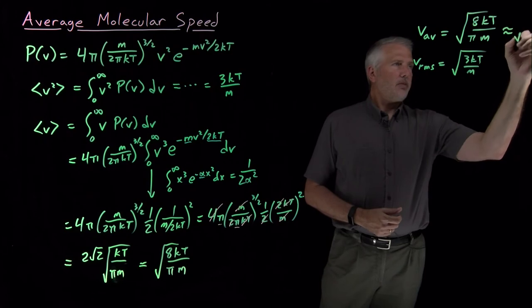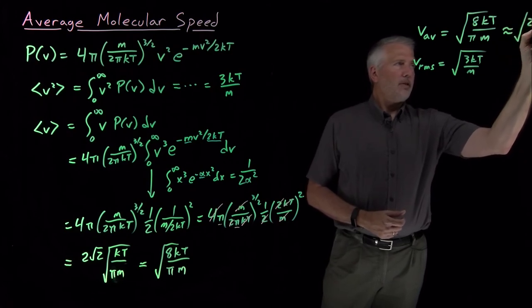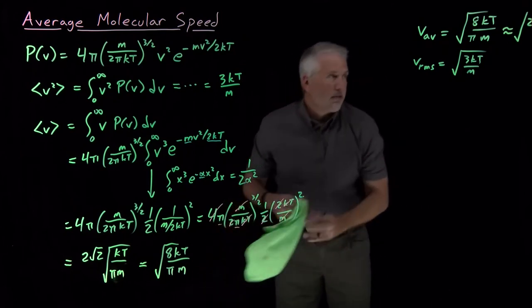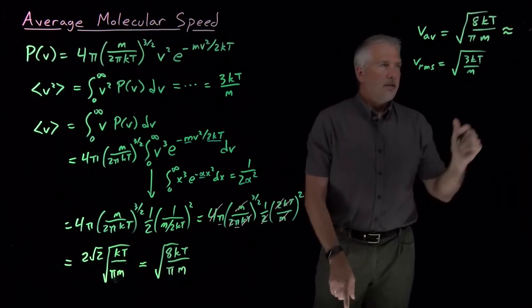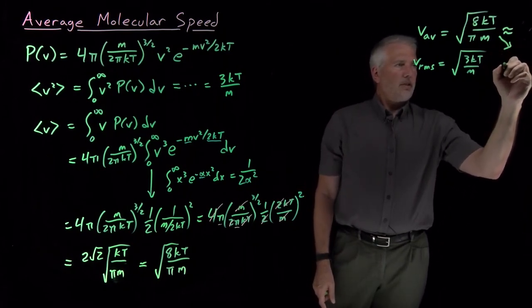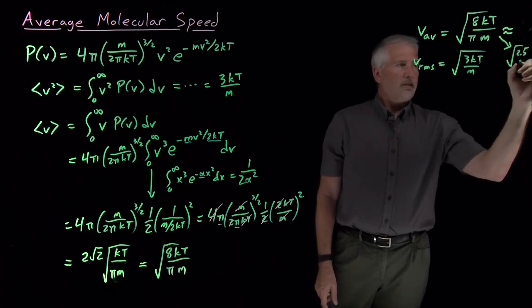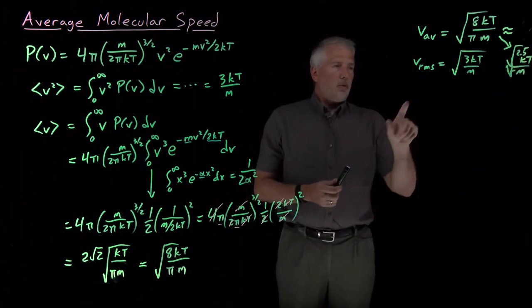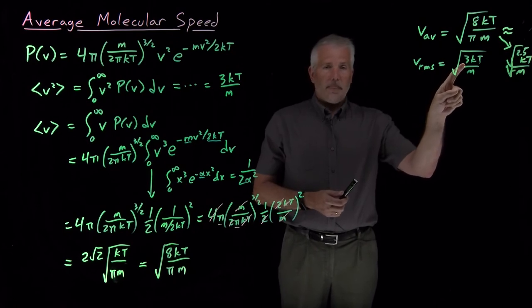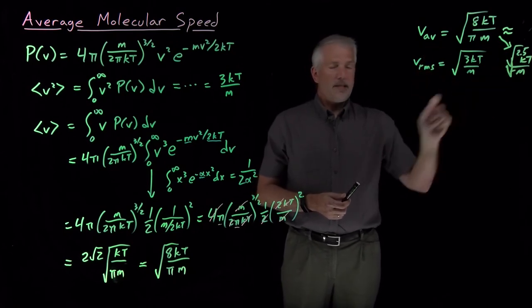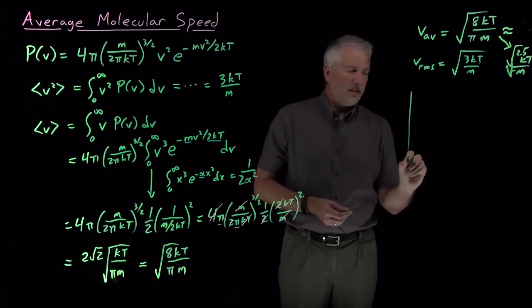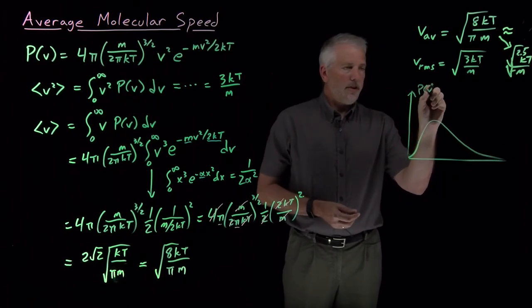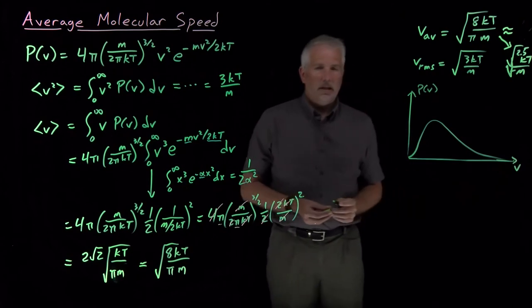I'll write that where you can see it. That one is 2.5 kT divided by mass. So the root mean square velocity, square root of 3 kT over m is larger than the average velocity, 2 and a half kT over m inside a square root. So when we're looking at the velocity distribution, Maxwell Boltzmann tells us the probability of having a certain speed has a shape like this.